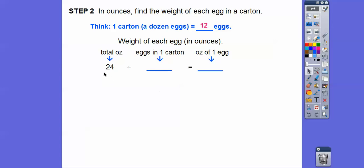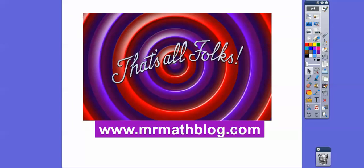We're going to take that 24 ounces, what the whole carton weighs, and we're going to divide that by 12 eggs. 24 divided by 12 is 2. So each egg weighs about 2 ounces. I hope that makes sense, and take care.